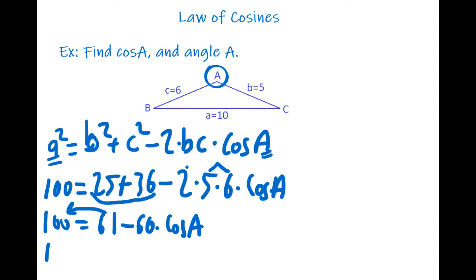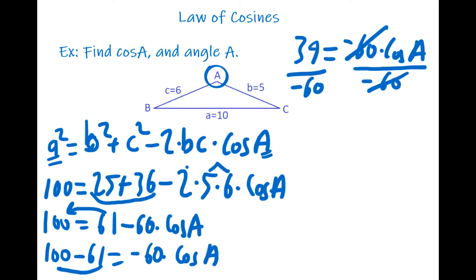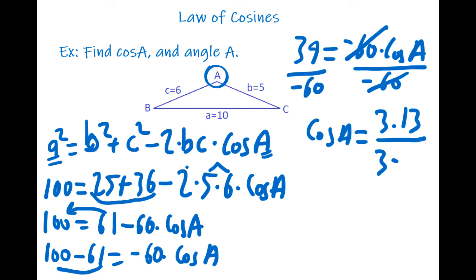I'll move 61 to the left side — it was positive, so it becomes negative: 100 minus 61 equals negative 60 times cosine A. Subtracting gives 39 equals negative 60 times cosine A. To isolate cosine A, I divide both sides by negative 60. Simplifying: 39 over negative 60 — since 39 is 3 times 13 and 60 is 3 times 20, we cancel the 3s.